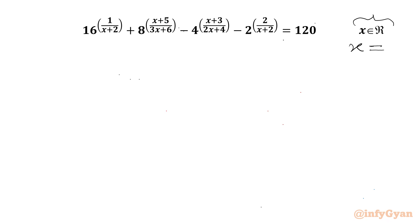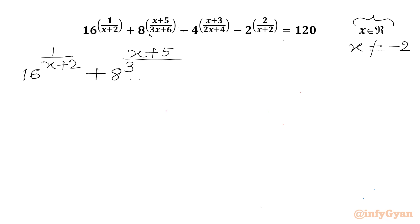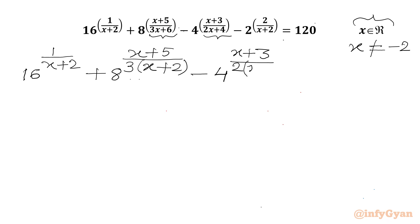I will write x cannot be equal to negative 2, since denominators cannot be 0. Let's write our equation: 16 power (1 over x+2) plus 8 power ((x+5)/3). Taking common from the denominator, I can write (x+2) in the bracket minus 4 power ((x+3)/2) is common. I will write 2 common out, in the bracket (x+2) minus 2 raised to the power (2 over x+2) equal to 120.